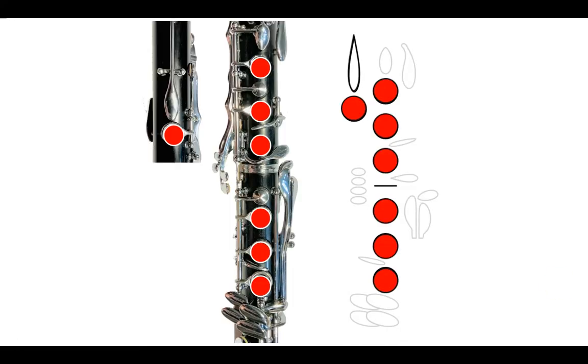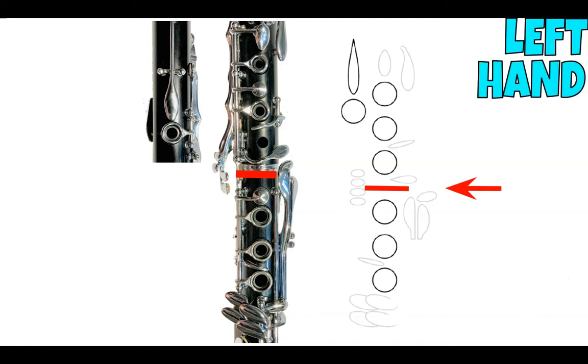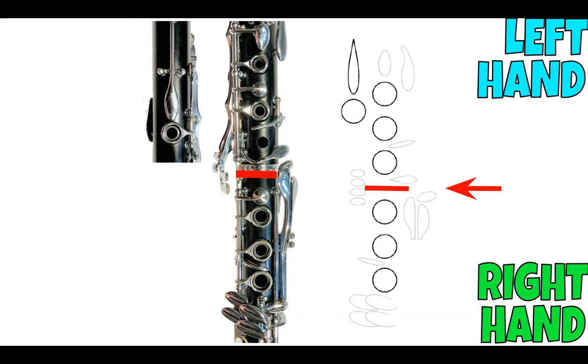This is an example of a clarinet fingering chart. The circles all match a hole on the clarinet. The other keys match all of the other keys that you see. This line divides the joints, so the top joint is played with the left hand and the bottom joint is played with the right hand.